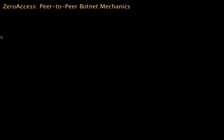When Zero Access installs on a particular system, one of the first things it does is talk to a central server. The Trojan will transmit to the central server some information about its coordinates, its configuration, and its architecture. The underlying IP address of the server is actually hard-coded inside the binary itself.